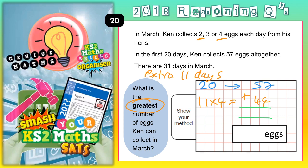7 add 4 is 11 — put the 1 down, carry the 1. 5 plus 4 is 9, plus 1 is 10. So that means 101 eggs. The most he can possibly get in March is 101 eggs.